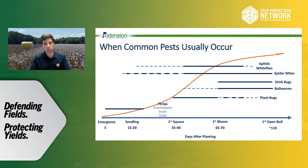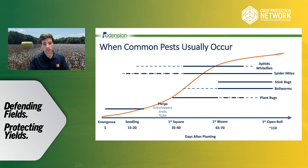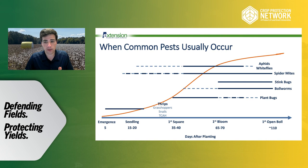We also need to have a plan. Whenever we walk into a field, we need to have an idea of what insects are important at certain times of the season, so we're not distracted looking for, say, stink bugs during the seedling stage — there are no developing seeds or bolls during the seedling stage, so stink bugs aren't an issue. That's when we need to be keying in on things like thrips, slugs, and snails.